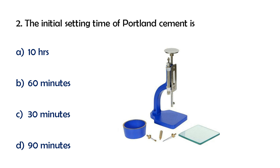The Vicat apparatus is used for three tests: consistency, initial setting time, and final setting time of cement. In the initial setting time test, cement is mixed and placed in a mold on a platform. The plunger is used for the consistency test.